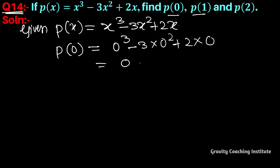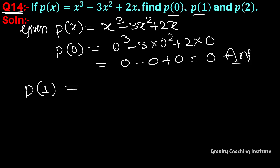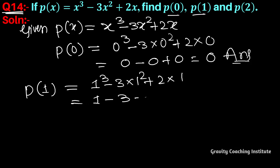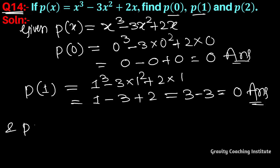p(0) = 0³ - 0 + 0 = 0. Now p(1): substituting x = 1, we get 1³ - 3 into 1 squared plus 2 into 1, which is 1 - 3 + 2, so 3 - 3 = 0. Answer: p(1) = 0.